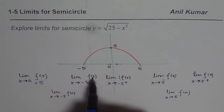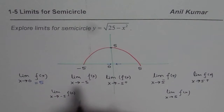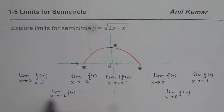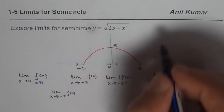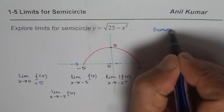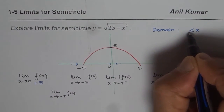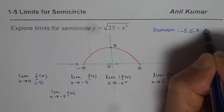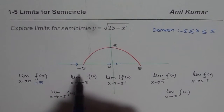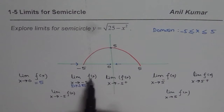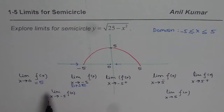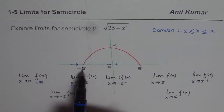Now let us look into the next one, which is limit of the function when x approaches minus 5 from the negative side — that means you are trying to approach from the left. Now remember, what is the domain of the function? The domain of this function is x greater than or equal to minus 5 and less than or equal to plus 5. So in this region to the left of minus 5, the function is not defined, and therefore this limit does not exist.